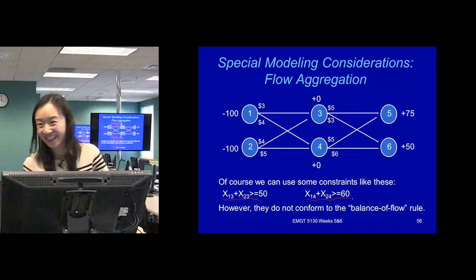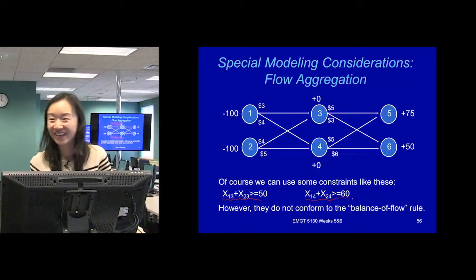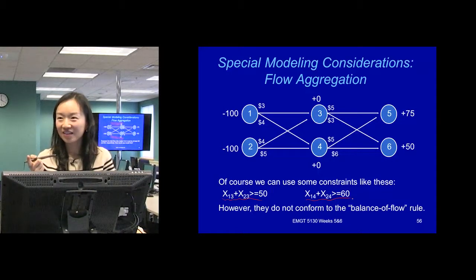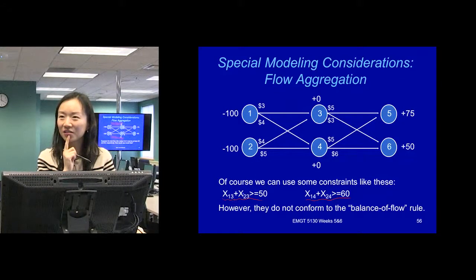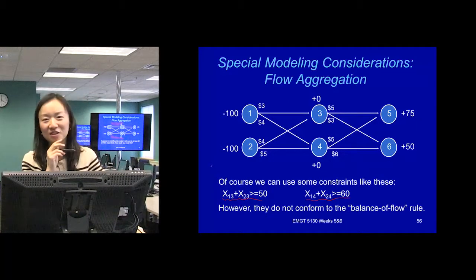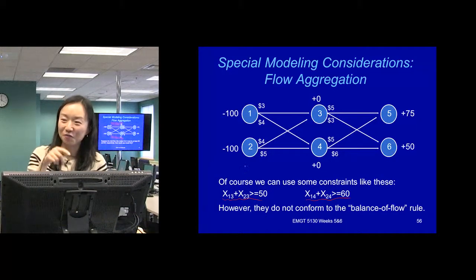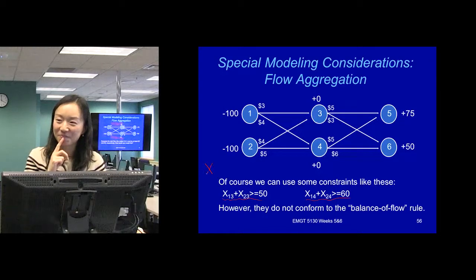Are you trying to suggest something? I have an idea, but I'm not sure if it's right. Take the 50 in your constraint and move it to the other side of the inequality. I'm not sure how to show that in the model. Move to the other side of the inequality. If we get x1,3 plus x2,3 minus 50 is greater than or equal to 0. On the right track. But what's the 50? It's still not inflow minus outflow, right? But you can modify it.